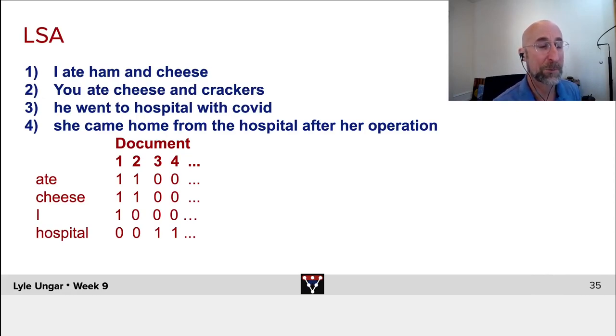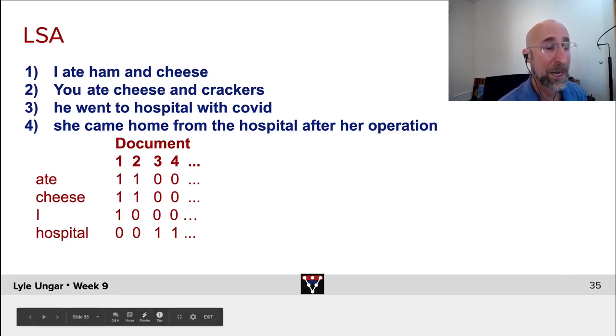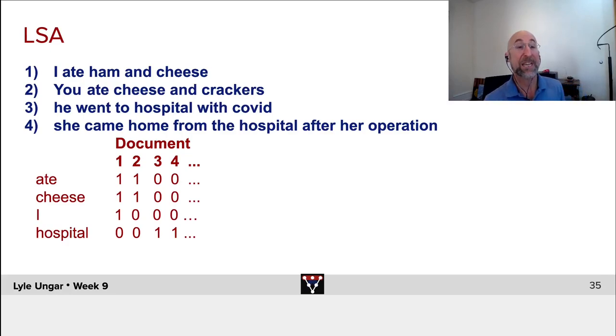but not in documents three and four. If I now take this matrix and do singular value decomposition, what I will find is that the first principal component will tend to load, that ate and cheese will be close to each other. They'll have similar reduced dimensions. And hospital will be close to doctor and nurse, in other words, operation, that will show up. And we'll see that related words have similar embeddings.